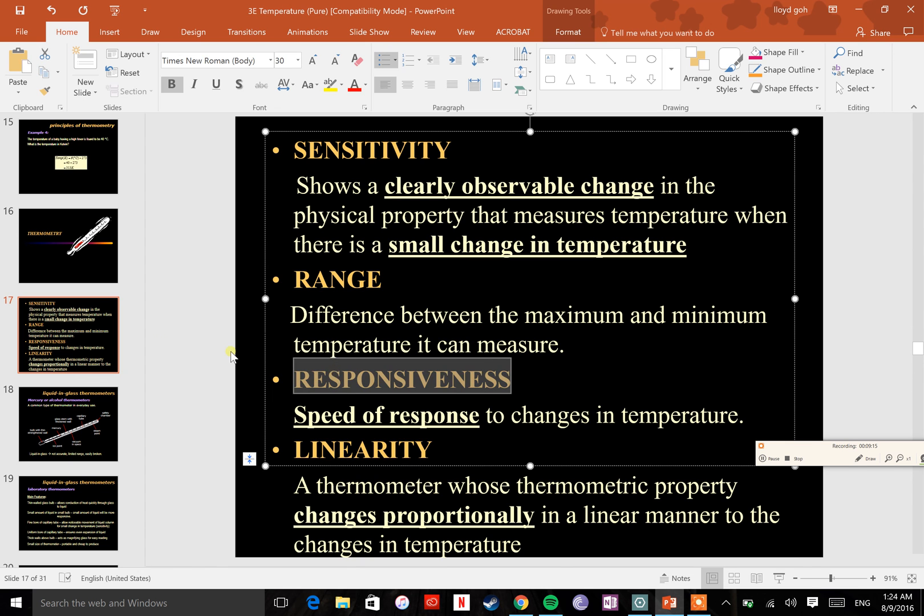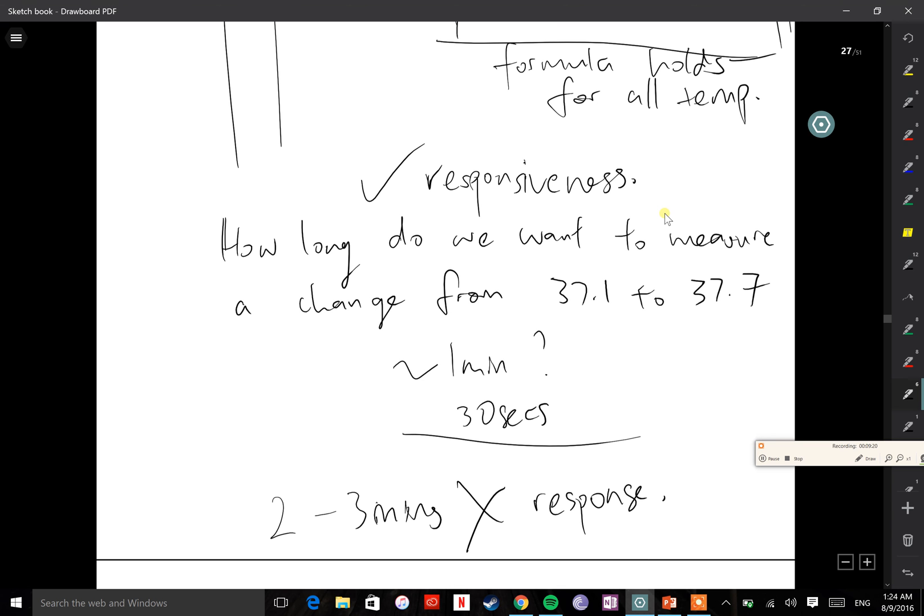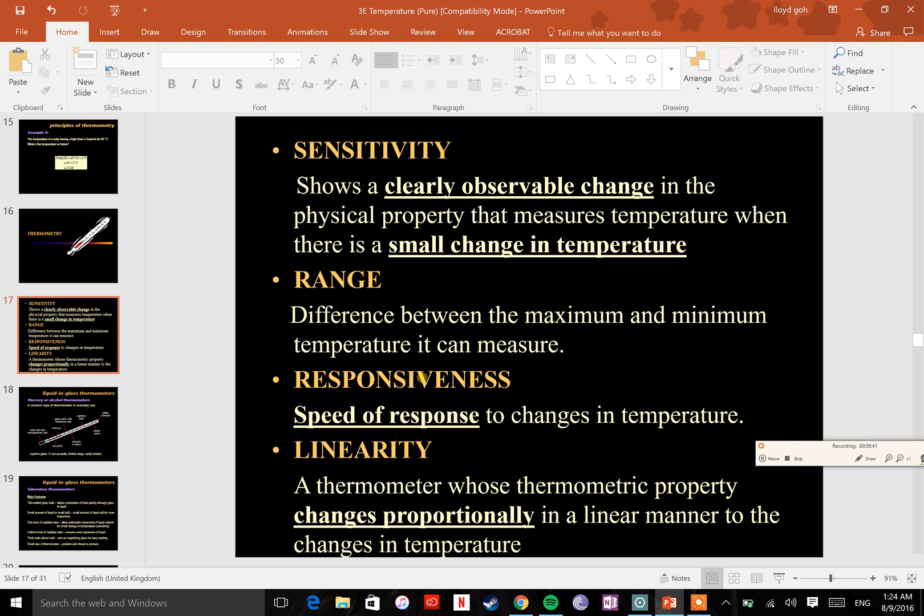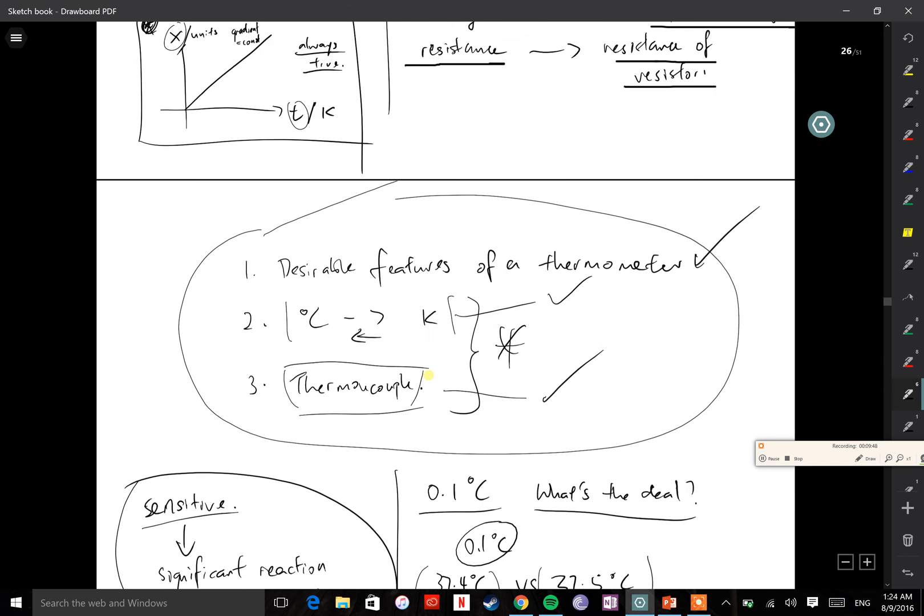The last thing I want to talk about is responsiveness before I end this video. Very quickly, ask yourself: how long do you want to measure a change from 37.1 to 37.7? One minute thirty seconds, two minutes, or three minutes? Think about when you're taking temperature during the temperature taking exercise - you do not want to put your thermometer in your mouth for too long, right? So one-thirty is reasonable, a good amount. We say this is a good response time; the responsiveness is good. Two to three minutes would be too long, and we do not want that.